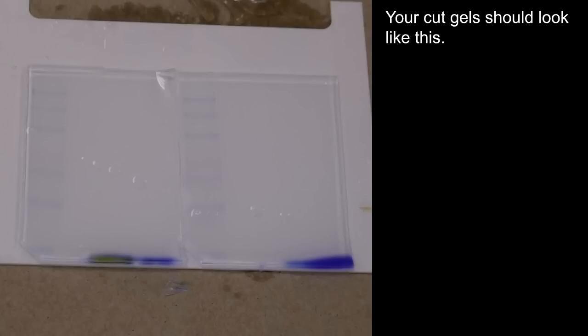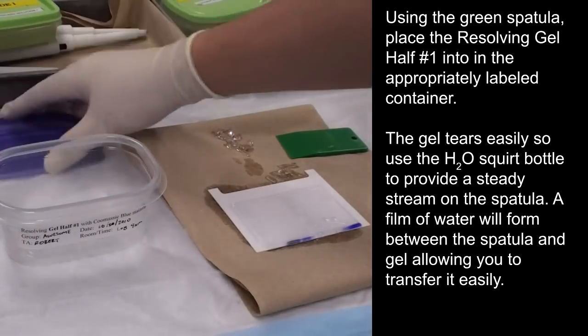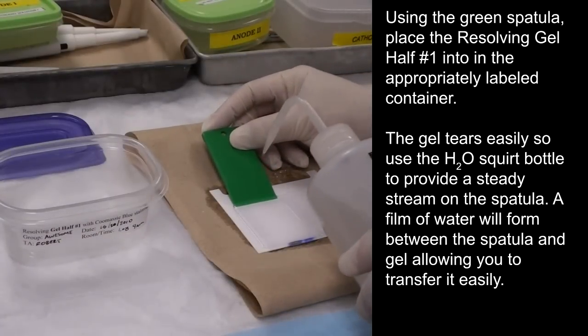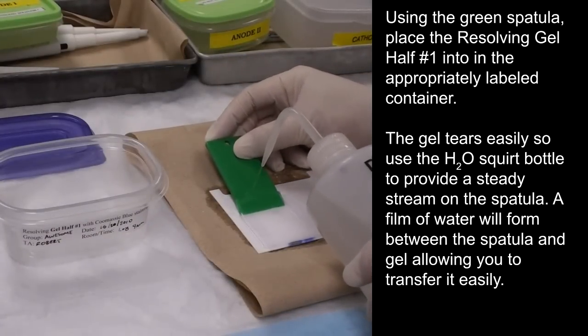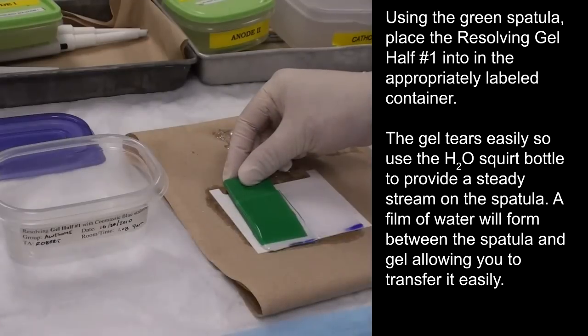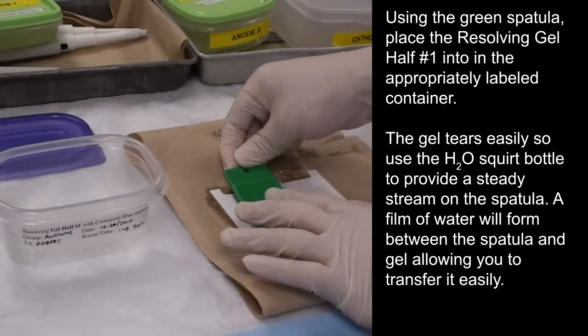Your cut gels should look something like this. Using the green spatula, place the resolving gel half number 1 into the appropriately labeled container. The gel tears easily, so use the water squirt bottle to provide a steady stream on the spatula. A film of water will form between the spatula and gel allowing you to transfer it easily.